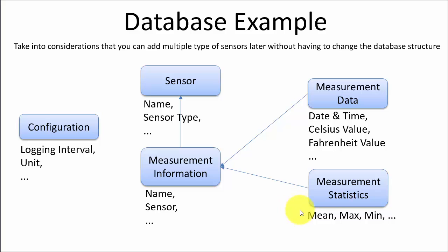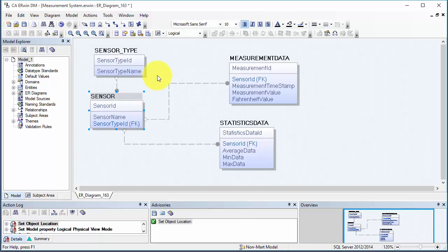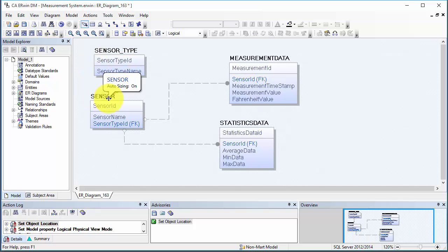In addition, we will store some statistics data for the measurements — the average or mean value, and the maximum and minimum value for the data within the database. We will use a trigger to save these values. Here you see an example of the design we have created in Erwin. This is a very simple design — it could be much more complicated — but this is just a simple example to illustrate a data logging and monitoring system.